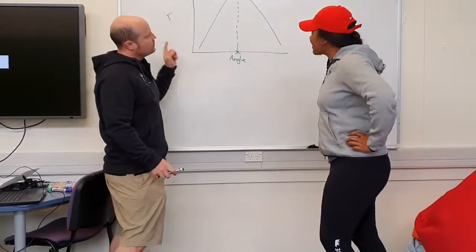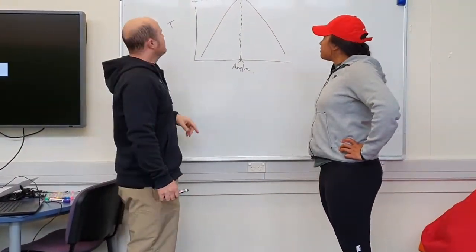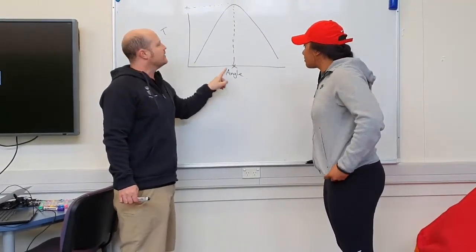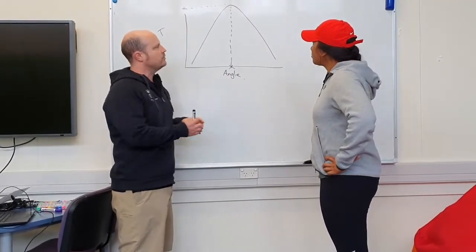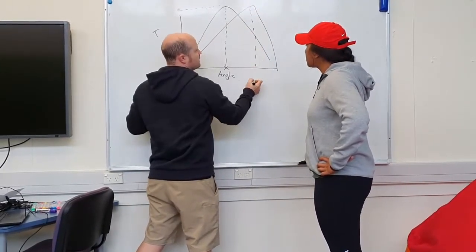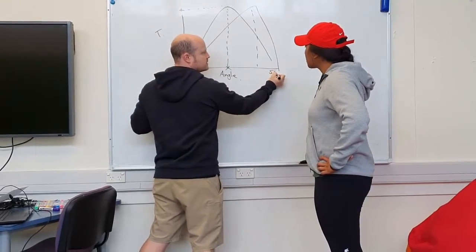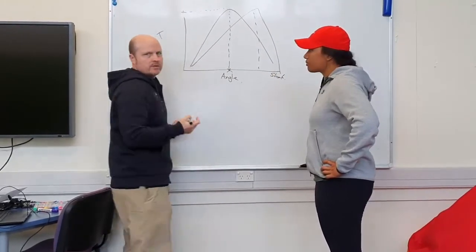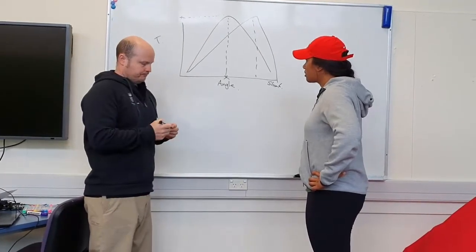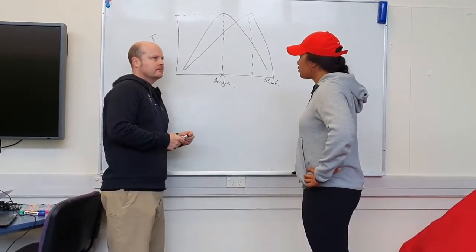So from the Humac norm, the isokinetic dynamometer, we get peak torque and angle of peak torque. And if our angle of peak torque is too far to short muscle lengths, we've got risk of injury. What are we going to do about it? We're going to strengthen it.